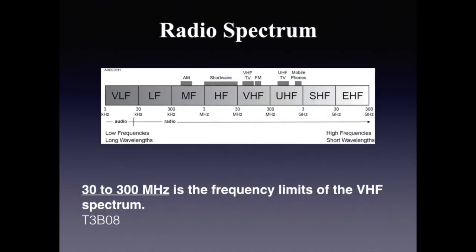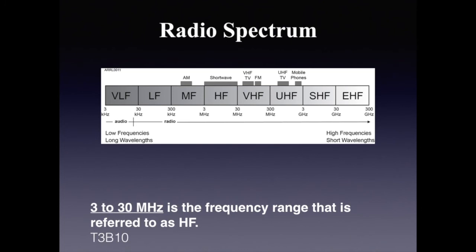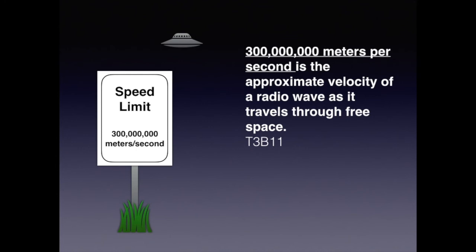The radio portion of the electromagnetic spectrum ranges from 3 kilohertz to 300 gigahertz. For the technician exam, know the limits of HF (high frequency), VHF (very high frequency), and UHF (ultra high frequency). 30 to 300 megahertz are the frequency limits of the VHF spectrum. 300 to 3000 megahertz are the frequency limits of the UHF spectrum. 3 to 30 megahertz is the frequency range referred to as HF. Know that 300 million meters per second is the approximate velocity of a radio wave as it travels through free space.